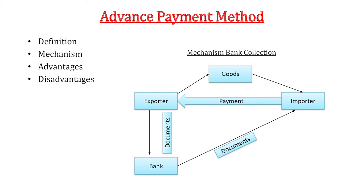In the advance payment method, the importer is taking the risk. To get advance payment, the exporter has to develop trust. In every transaction, you have to do something to create trust in the mind of the buyer so that he can give advance payment. This trust relates to your capacity to produce goods and whether you are a producer of quality products. Reputation and brand image create an impression in the mind of the foreign buyer so that he gives advance payment.